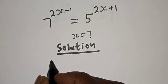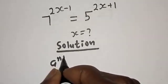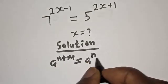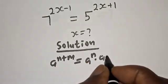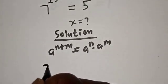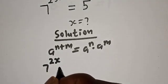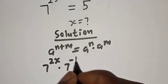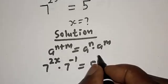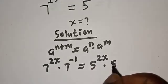Take note of this exponential rule: if you have a raised to power n plus m, this is equal to a raised to power n multiplied by a raised to power m. We have 7 raised to power 2s multiplied by 7 raised to power minus 1, is equal to 5 raised to power 2s multiplied by 5 raised to power 1.